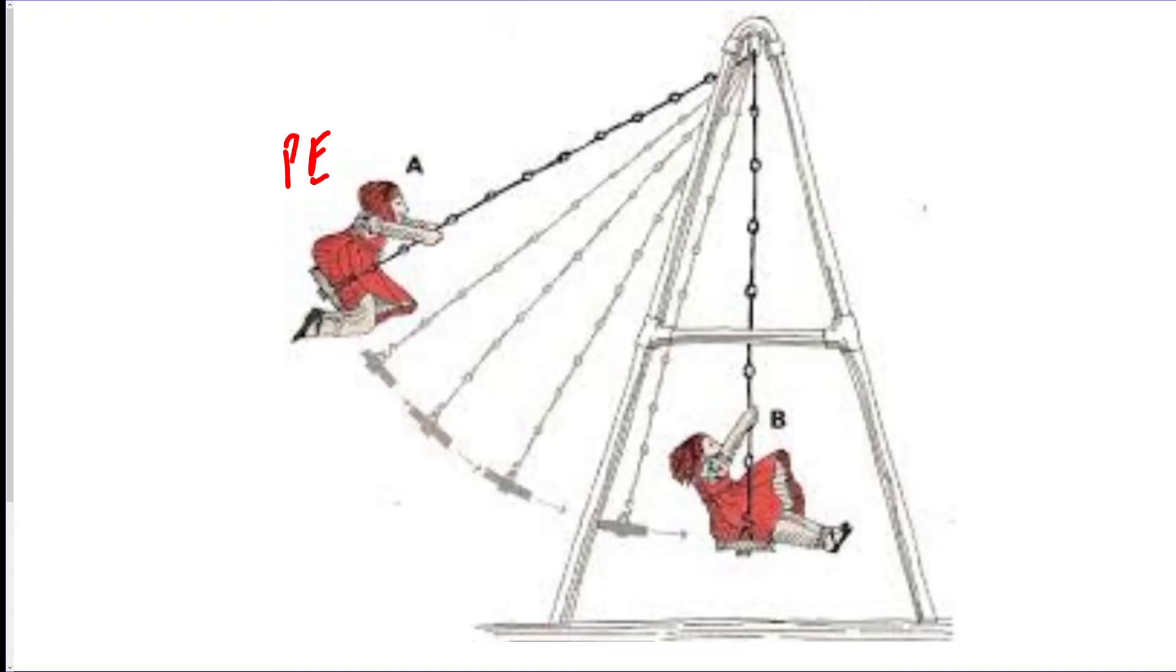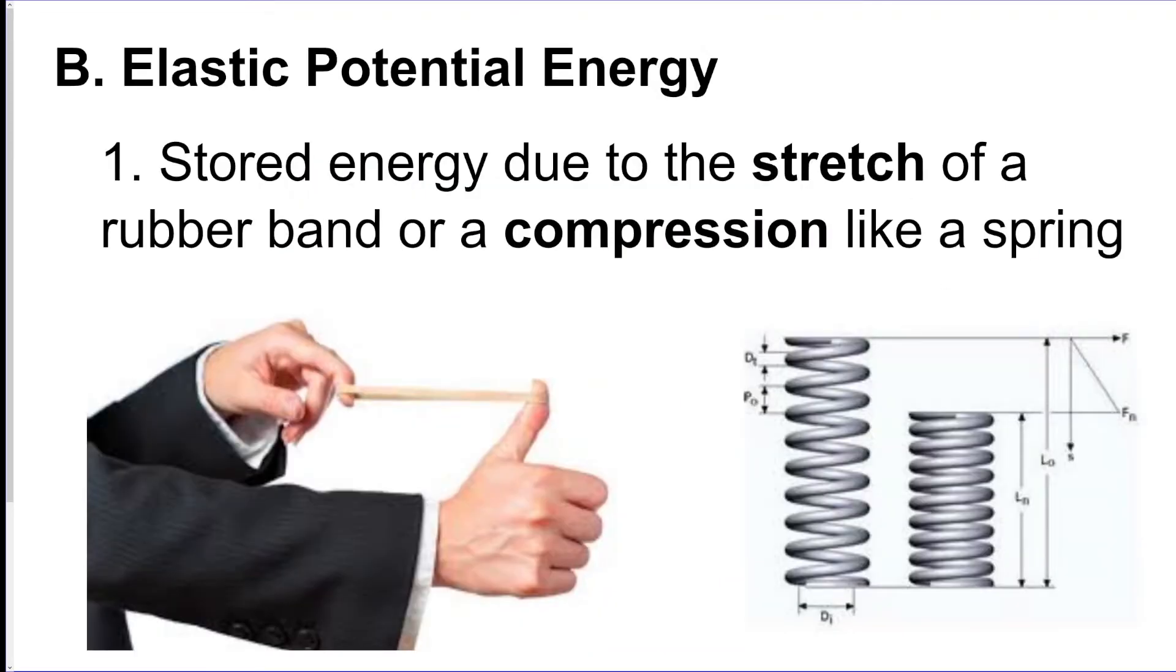If the potential energy is due to a stretching or compression, like in a spring or a rubber band, or maybe even like a bow and arrow since it's got that string, we call that elastic potential energy because you're stretching something.